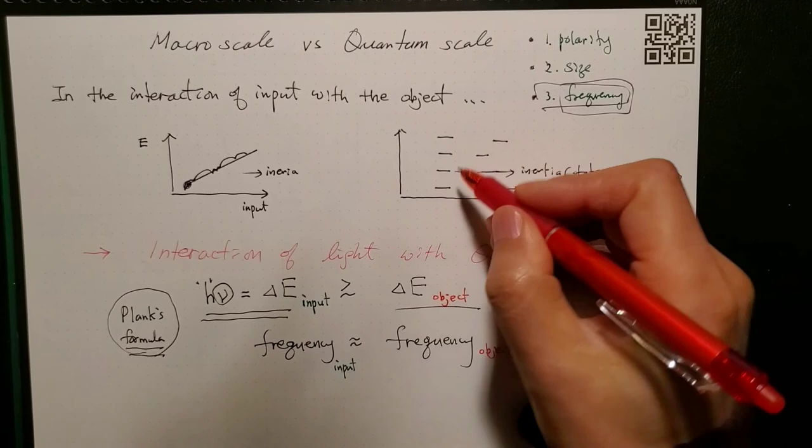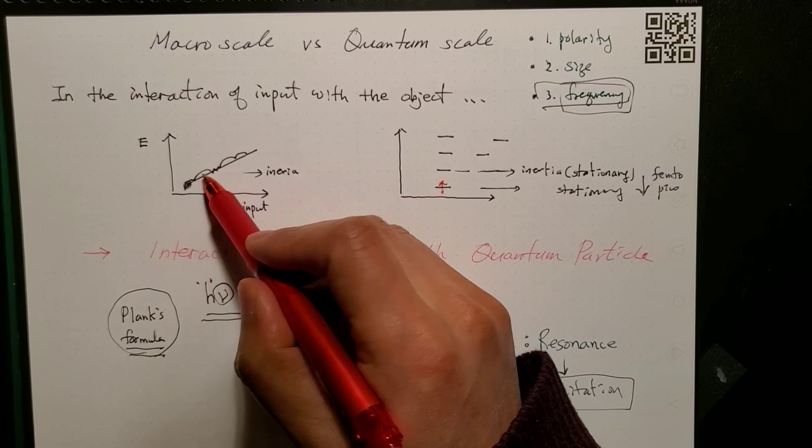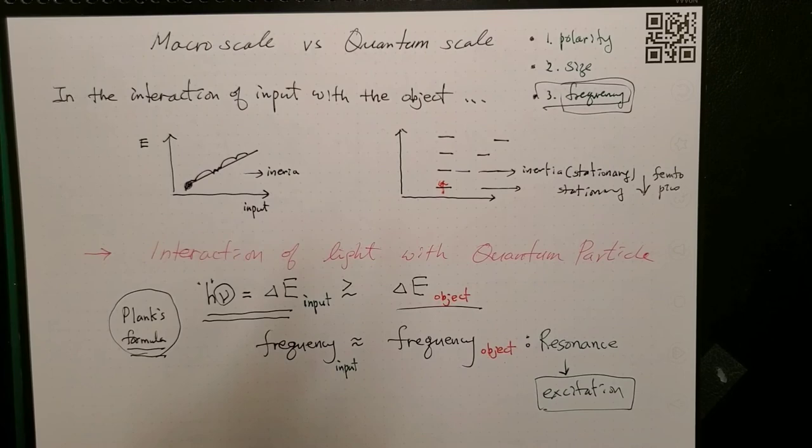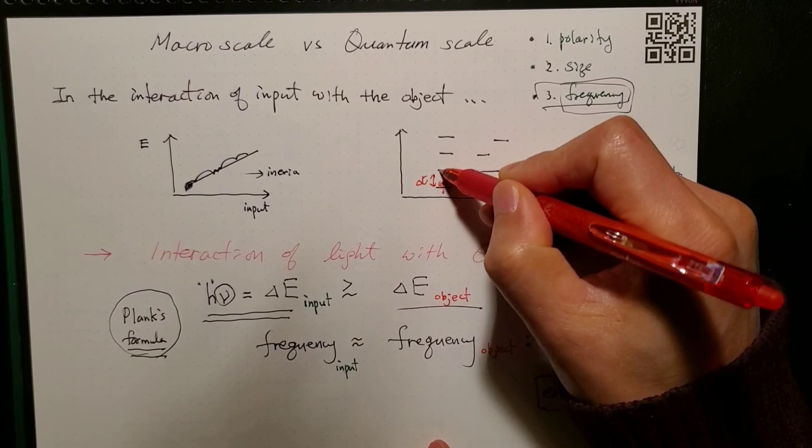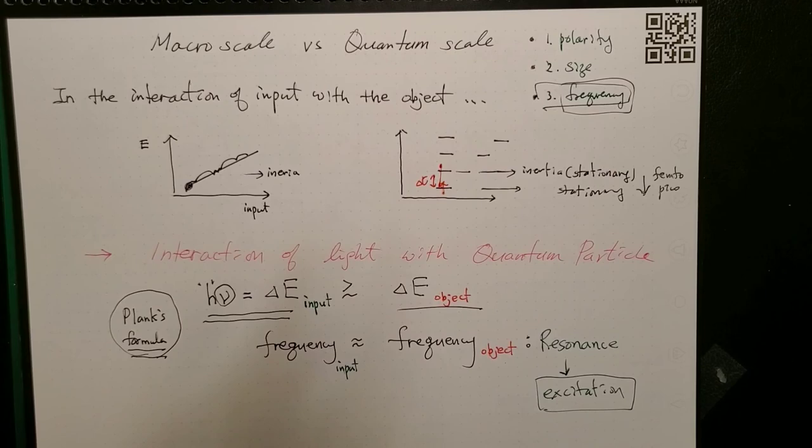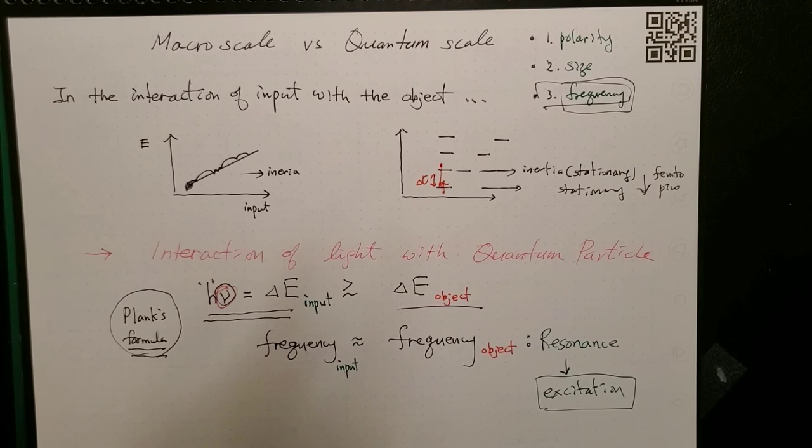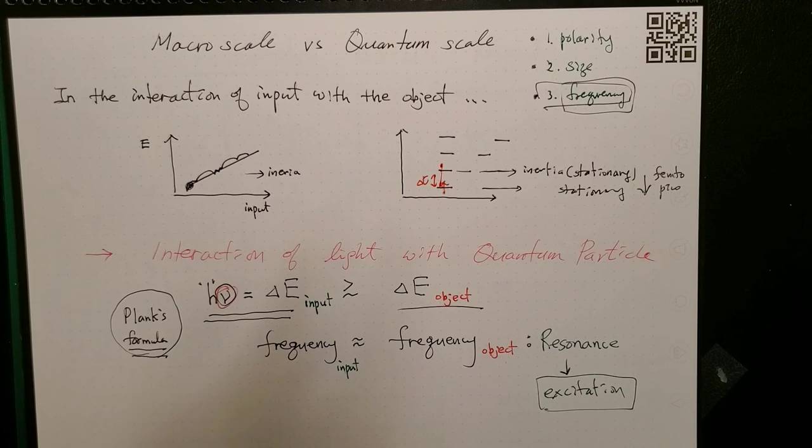So if you want to push up electron down here to up there, you cannot accumulate by giving point one, point one, point one, point point point point. You don't think of more power, massive power. It's more of frequency of the photon you give.